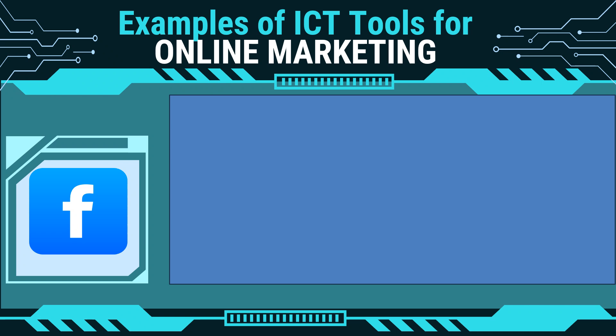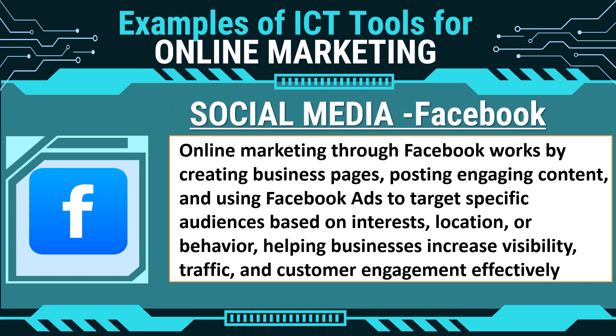Here are some examples of ICT tools used in online marketing. Can you guess what this logo is? Who among you is using this one? One example of online marketing through social media is by using Facebook. Online marketing through Facebook works by creating business pages, posting engaging content, and using Facebook ads to target specific audiences based on interests, location, or behavior, helping businesses increase visibility, traffic, and customer engagement effectively.